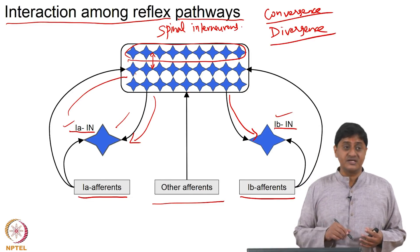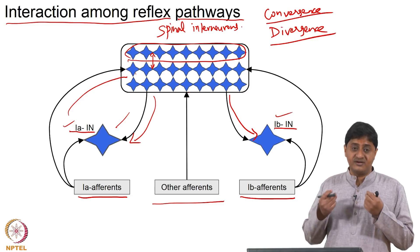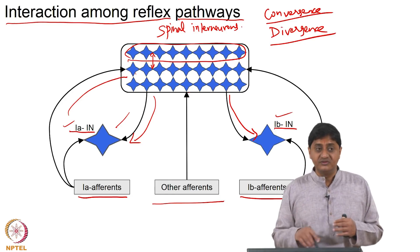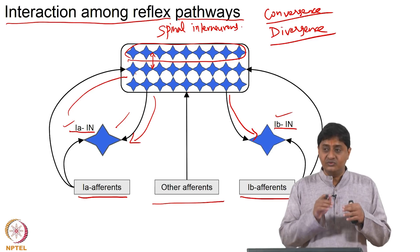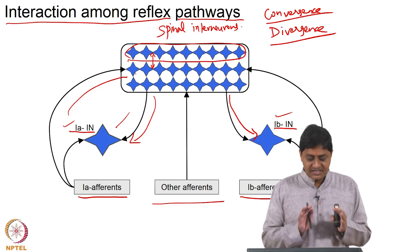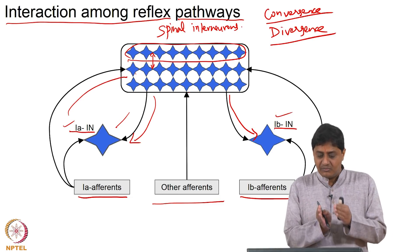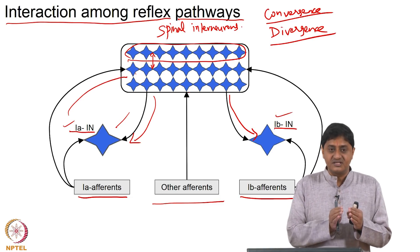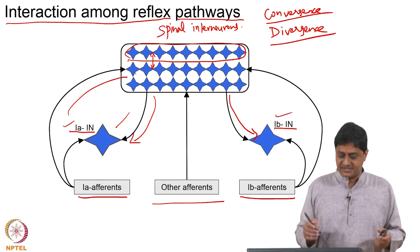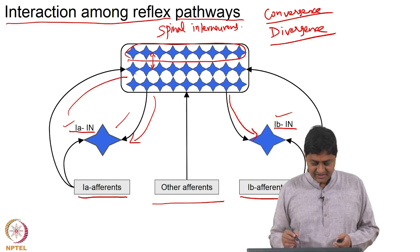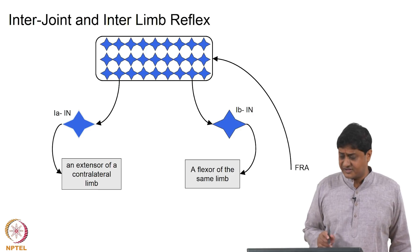This interaction of convergence and divergence is also seen at the level of the brain, which we will discuss in future classes — while discussing primary motor cortex, cerebellum, and basal ganglia. Inputs from multiple sources coming to a particular place is convergence; a command from one source going to multiple places is divergence. Both are present.